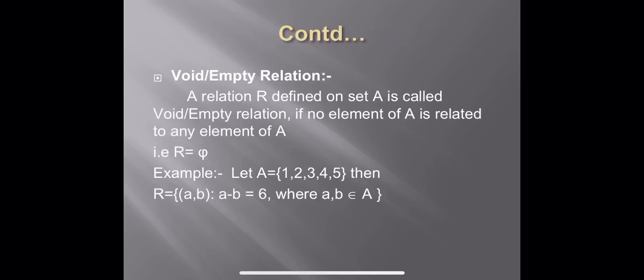The next type is the void relation or empty relation. As clear from the name, nothing will be there in the relation. Definition: a relation R defined on set A is called void relation or empty relation if no element of set A is related to any element of A. The notation for empty relation is the empty set symbol.